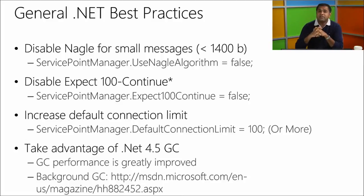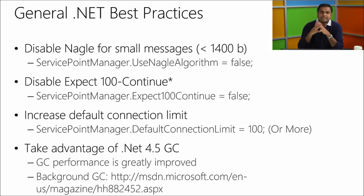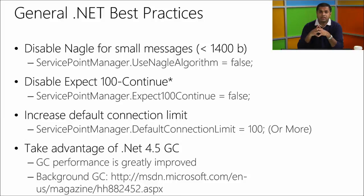Increase the default connection limit. Almost everybody hits this — the default is two, meaning only two outstanding requests to the storage service endpoint at any given time. If you're a production app, you'll have more than two requests. Set this to 100 or more depending on how many requests per second you serve. It won't use all those connections; it only creates a connection if none is available.